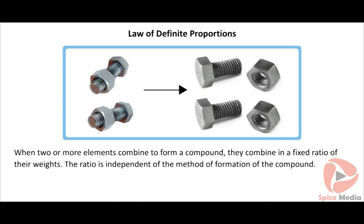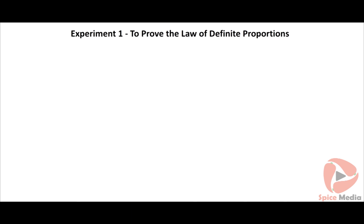Law of definite proportions: when two or more elements combine to form a compound, they combine in a fixed ratio of their weights. This ratio is independent of the method of formation of the compound. Experiment one — to prove the law of definite proportions.